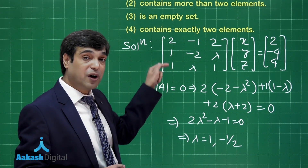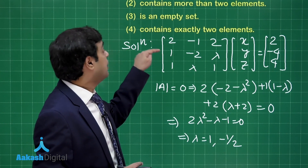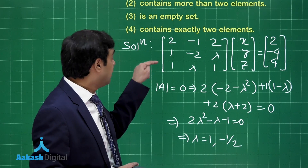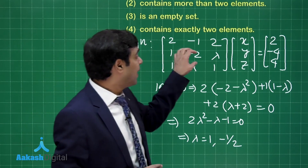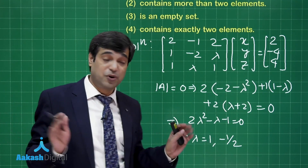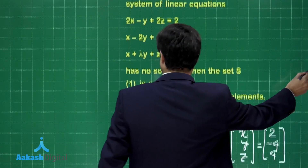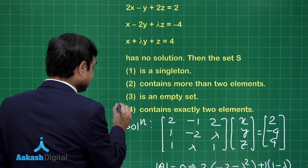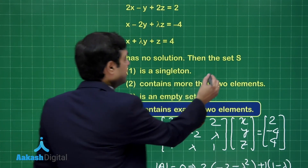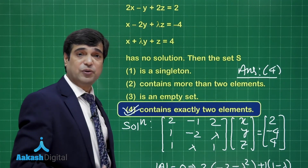As an optional method, using the augmented matrix: apply R2 replaced by R2 minus half R1, and R3 replaced by R3 minus half R1 — applying the same operations on the b side gives the answer directly. From the given options, since S contains exactly two elements (lambda = 1 and lambda = -1/2), the answer is option number 4.